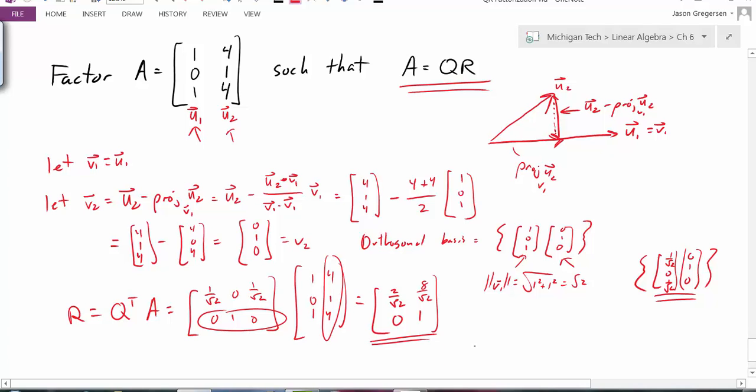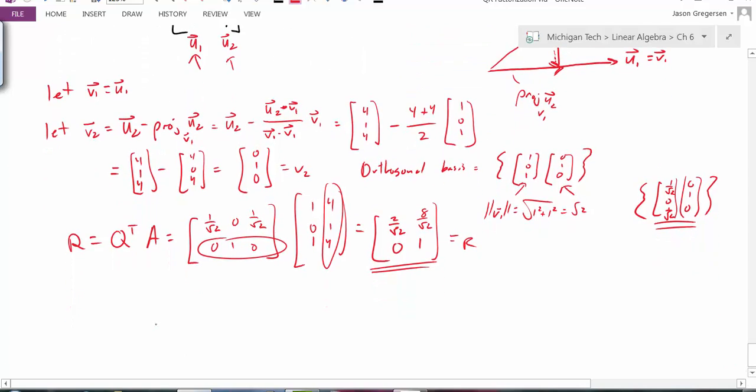So it looks like this should be my matrix R. And so now I have found A to be equal to Q, which is the matrix 1 over root 2, 0, 1 over root 2, 0, 1, 0.